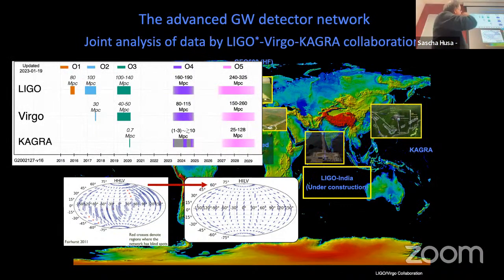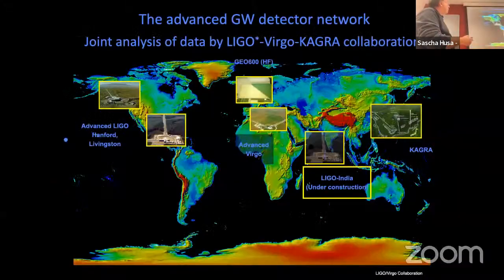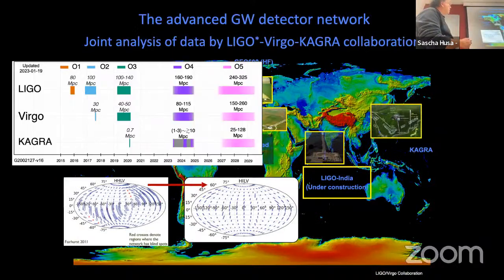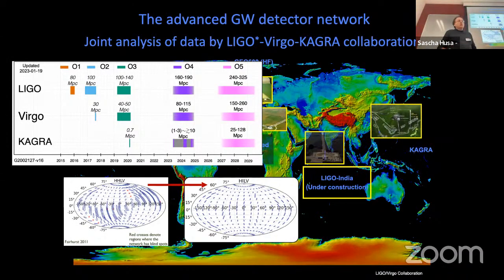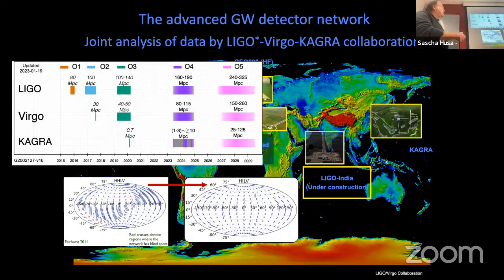The current plan for observation runs: O4 will have improved sensitivity, currently scheduled to start in May for a year and a half, followed by another break. In O4 we hope to see a few hundred signals — maybe one or two per day. After that there will be further upgrades improving both high-frequency and low-frequency sensitivity through improvements to optics, seismic insulation, and other hardware, though not yet the major changes like cooling or going underground.